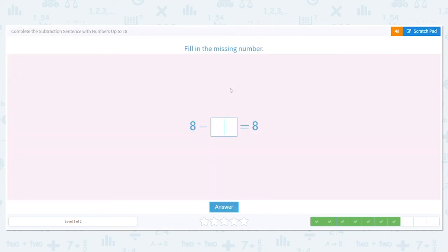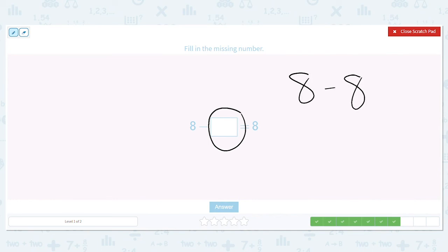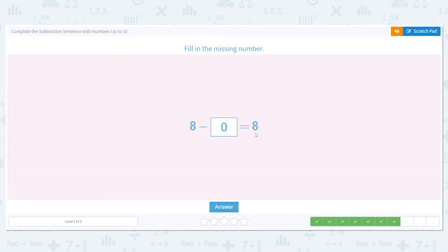8 minus something equals 8. Let's use our fact family to help us. We're trying to find this number here. So I'm going to take my 8s and I'm going to subtract them. I'm rearranging the numbers to find out what I'm missing. So 8 minus 8 equals what? It's 0. So if we're correct, if I put 0 in this box, this should make it true. 8 minus 0 equals 8. Is that true? It is.